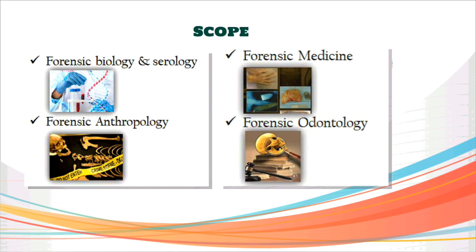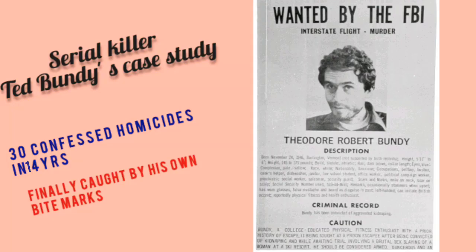Then coming to forensic odontology — this is the study of dentition and teeth arrangements. The dentist should be specialized in the forensic aspect to become a forensic odontologist. In especially mass disasters, the teeth pulp helps in getting DNA because sometimes tissue DNA gets degraded. Even the unique arrangement of teeth and bite marks would help in identifying the person.